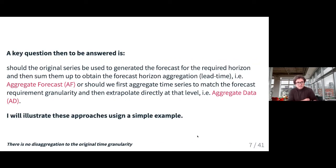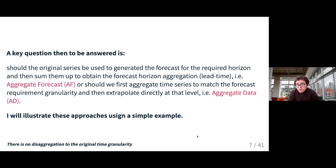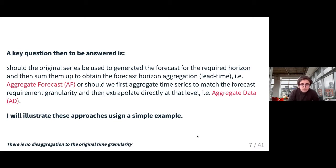A key question to answer is: should the original time series be used to generate the forecast for that particular horizon? For example, if the lead time is 12 months, you first generate a forecast for every month and then sum them up — we call this the aggregate forecast. Or should we first aggregate the time series to match the forecast requirement granularity, and then extrapolate directly at that level? We call this aggregate data. When we generate the forecast over lead time, we don't break it down again to go back to the original level.